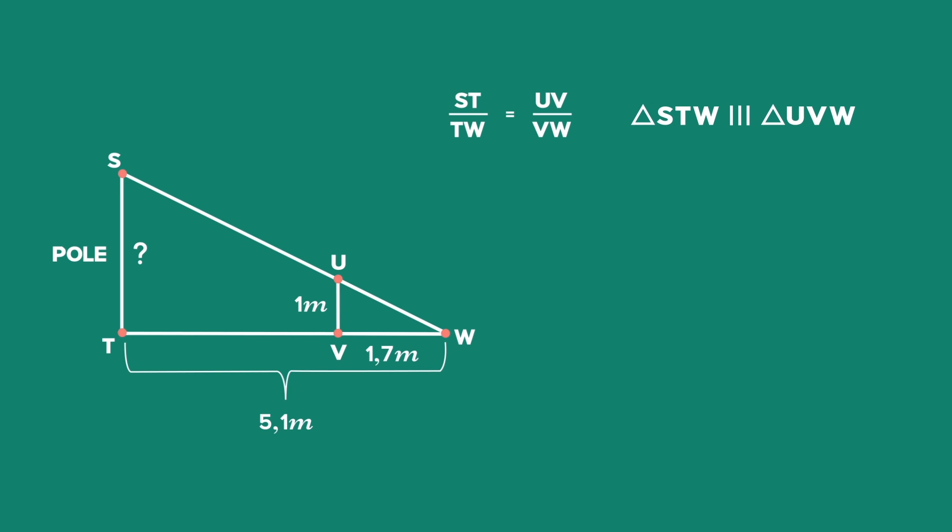Filling in the values of the known sides, we get ST over 5.1 is equal to 1 over 1.7. Cross multiplying, we get that ST is equal to 1 times 5.1 over 1.7, which equals 3 meters.